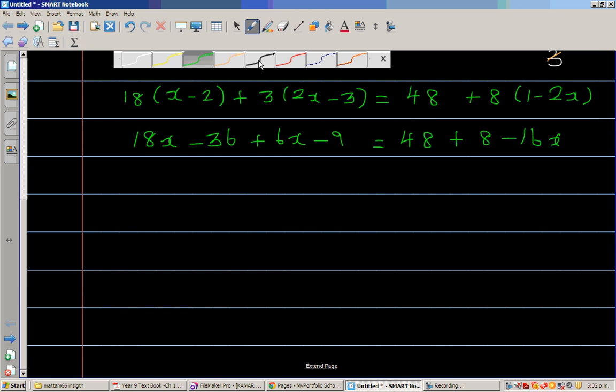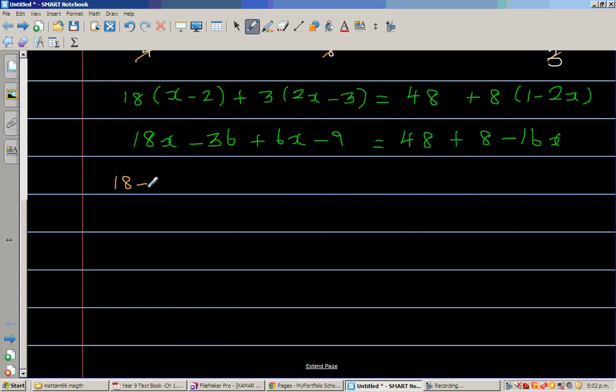Let's simplify the left hand side. So let me write this as 18x plus 6x minus 36 minus 9. Let's simplify the right hand side. So 48 plus 8 is 56 minus 16x. So this is 18x plus 6x is 24x minus 45 is equal to 56 minus 16x.